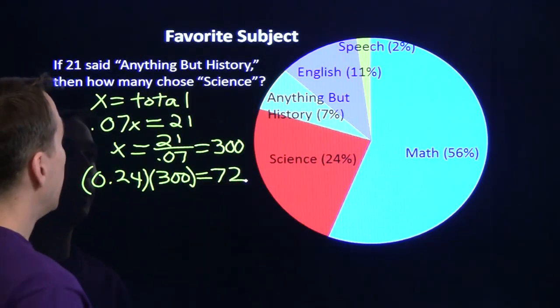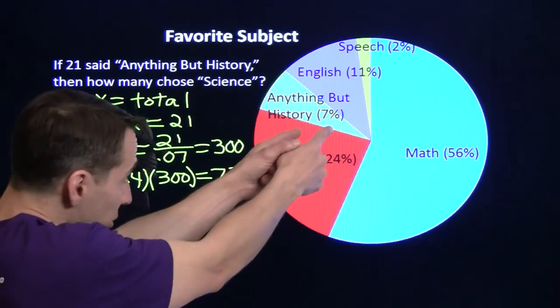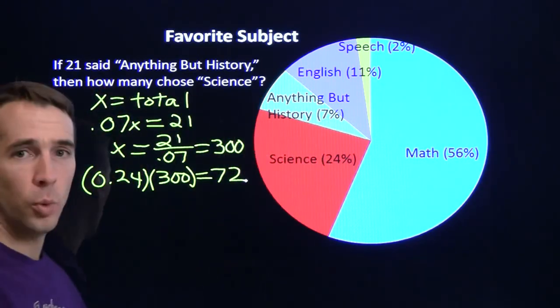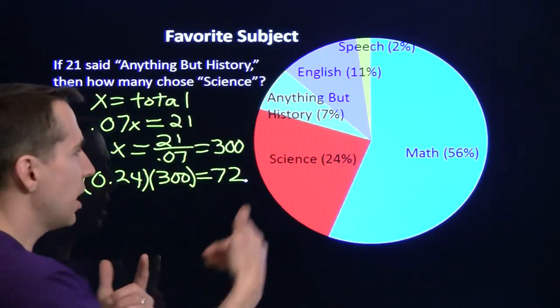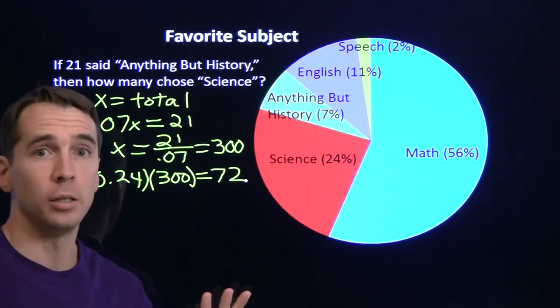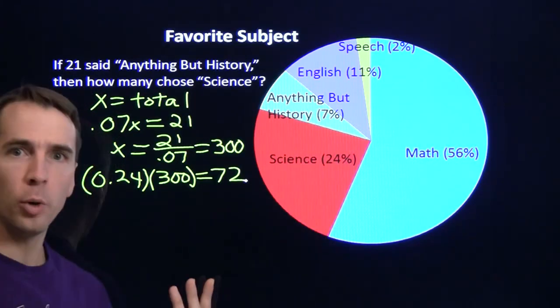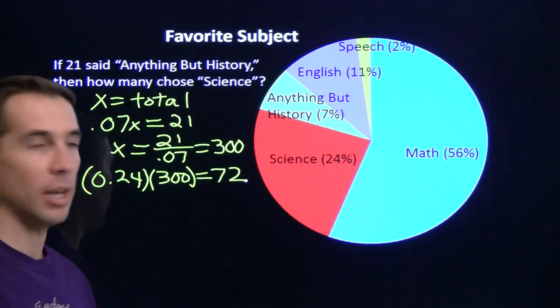So that's one way we could have tackled the problem. Now another way we could tackle this is, 7% is 21. Well, if I divide by 7, that means 1% is 3. So if 1% is 3, then 24% is 24 times 3. That gives us 72.